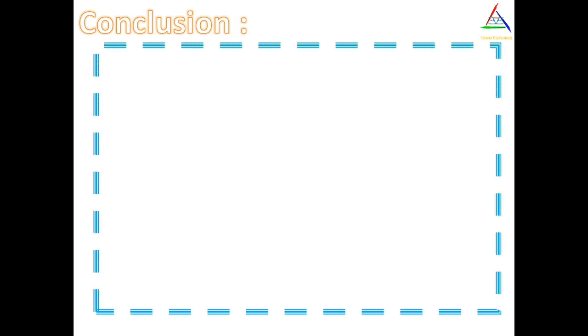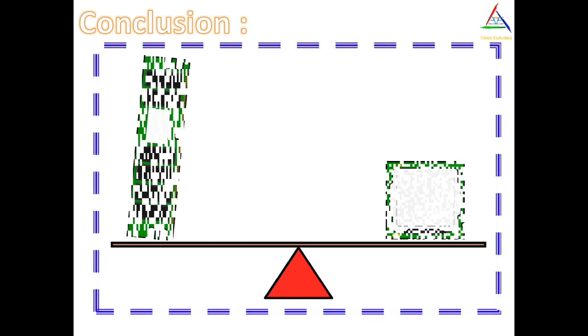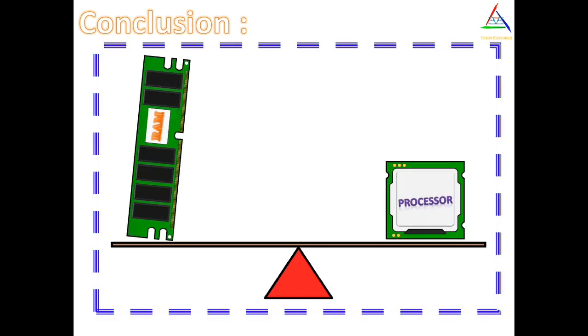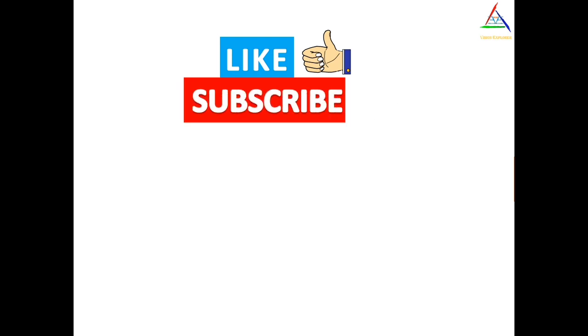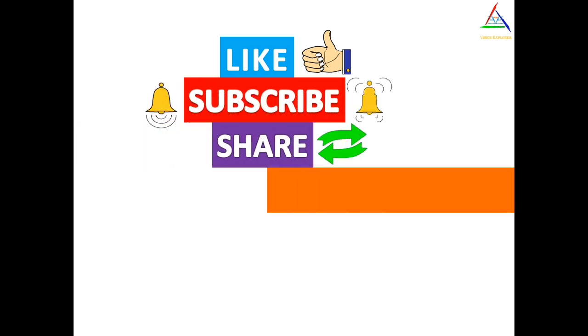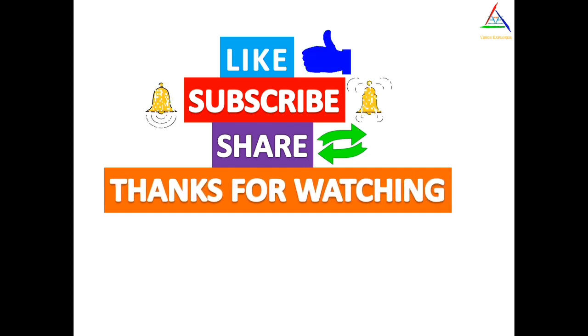Now after this whole narration, we can conclude that more RAM can't compensate for a slower processor, and a fast processor isn't suitable with less RAM. So the conclusion is, there must be a suitable balance between RAM and processor as both are equally important.